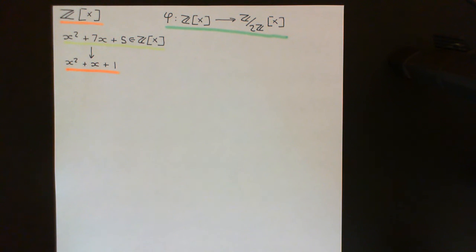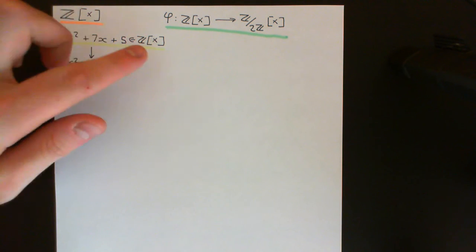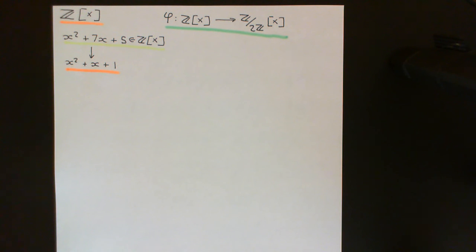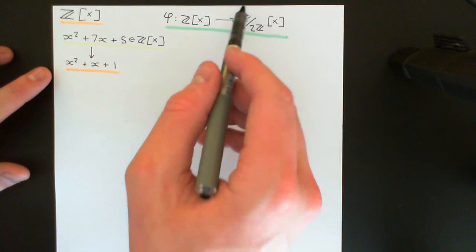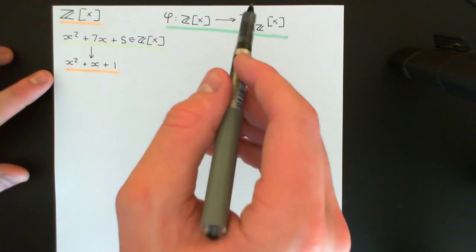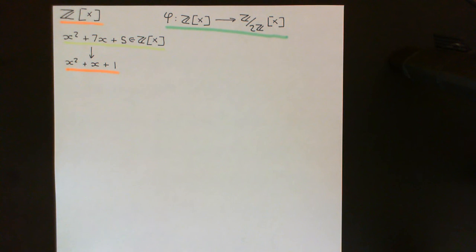The question now becomes: can we write x² + x + 1 as the product of two polynomials of smaller degree in (ℤ/2ℤ)[x]? If the answer is no, then we can conclude that the original polynomial x² + 7x + 5 was irreducible in the ring of polynomials with coefficients in the integers. Since ℤ/2ℤ is a field and therefore an integral domain, the degree of a product equals the sum of the degrees.